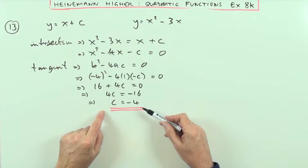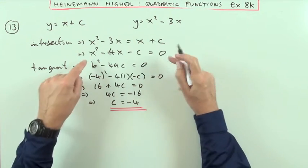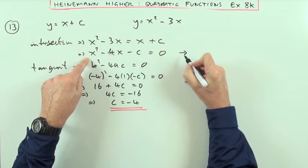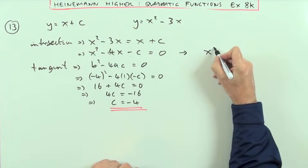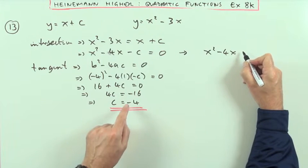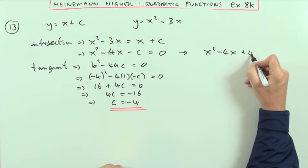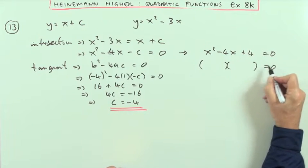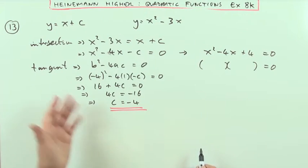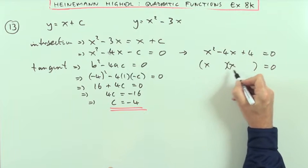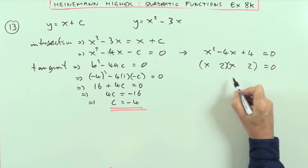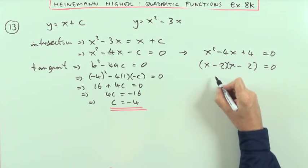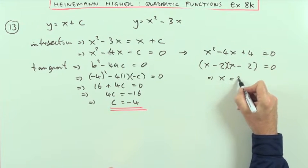So now we know that c is negative 4 then we know that this equation, so if I take this across to here now should read x squared minus 4x take away negative 4 plus 4 equals 0. And it'll be no surprise that that's going to factorize to two identical brackets because it was a tangent. So it can only be x times x and it can only be 2, 2 and it can only be minus, minus. In other words x equals 2.